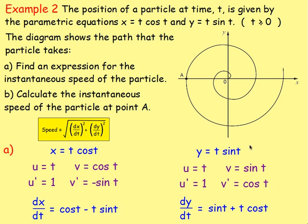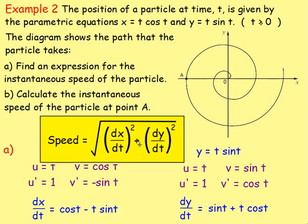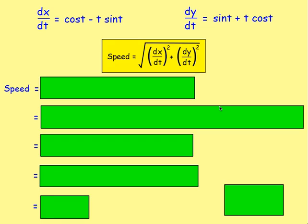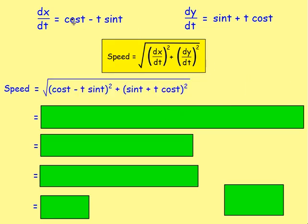The instantaneous speed is the square root of (dx/dt)² + (dy/dt)². So we take the square root of (cos(t) − t·sin(t))² + (sin(t) + t·cos(t))², and we need to expand those brackets.